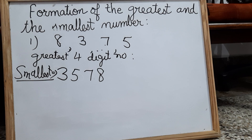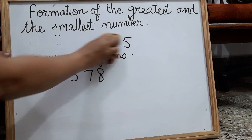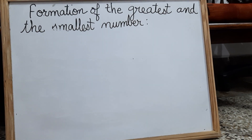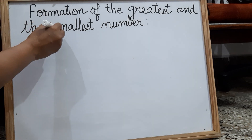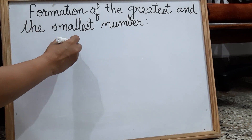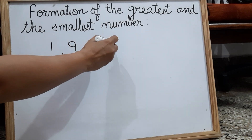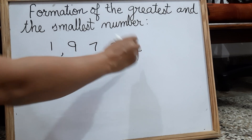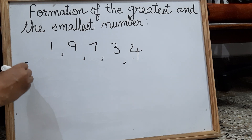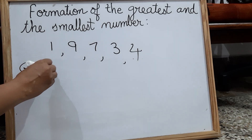Let me take one more example. This time I will take five digits: one, nine, seven, three, and four. You have to form the greatest five digit number and the smallest five digit number.